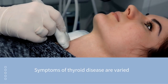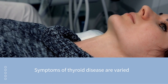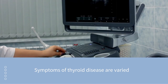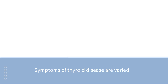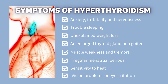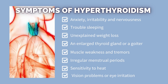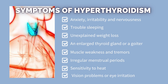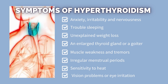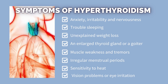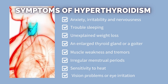The symptoms of thyroid disease are varied. Unfortunately, symptoms of a thyroid condition are often very similar to the signs of other medical conditions and stages of life, making it difficult to determine if your symptoms are related to a thyroid issue or something else entirely. Symptoms of hyperthyroidism can include anxiety, irritability and nervousness, trouble sleeping, unexplained weight loss, an enlarged thyroid gland or goiter, muscle weakness and tremors, irregular menstrual periods or having your menstrual cycle stop, sensitivity to heat, and vision problems or eye irritation.